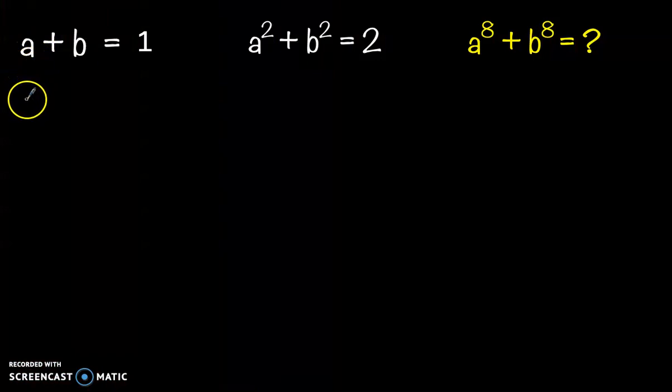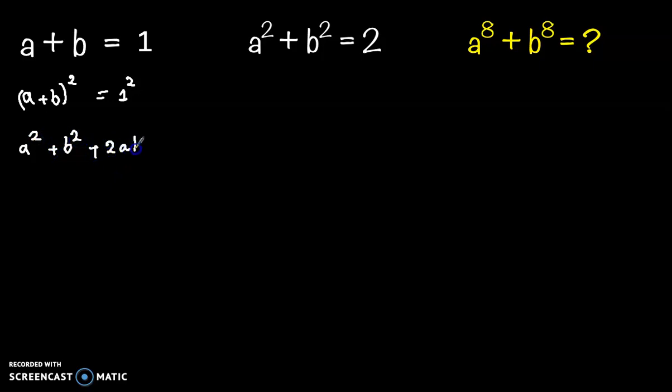First, let's square both sides. So (a + b)² equals 1². Now let's expand it. So a² plus b² plus 2ab equals 1² equals 1.